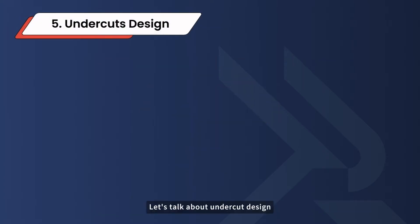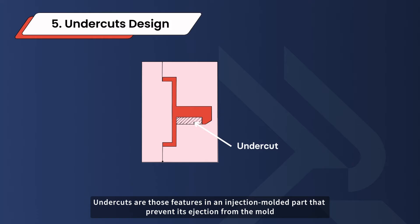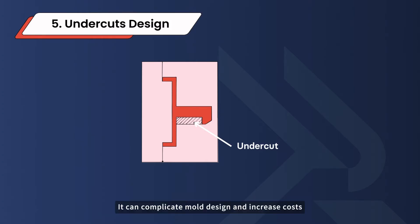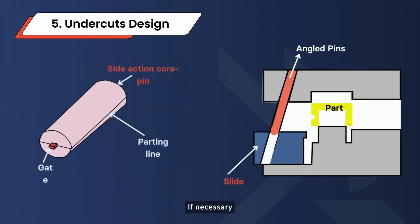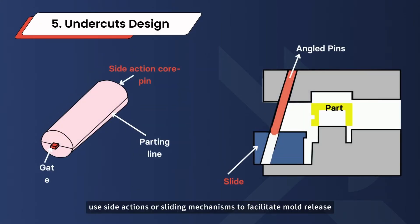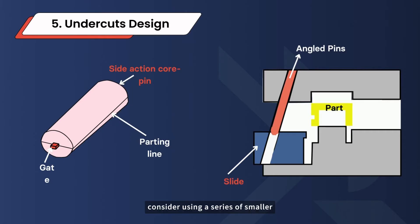Let's talk about undercut design. Undercuts are features in an injection-molded part that prevent its ejection from the mold. They can complicate mold design and increase costs. To avoid this, try to minimize undercuts in your design. If necessary, use side actions or sliding mechanisms to facilitate mold release. Instead of a deep groove that would require an undercut, consider using a series of smaller, more manageable features that don't impede mold opening.